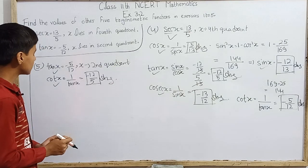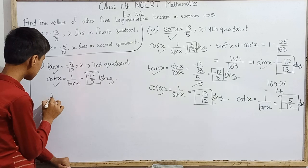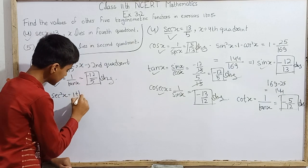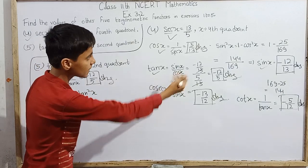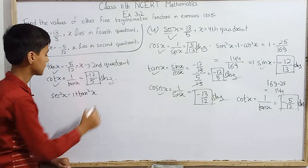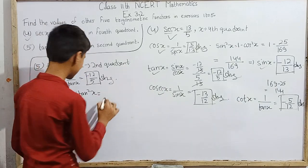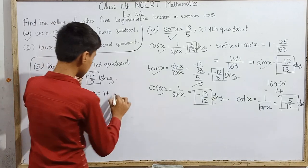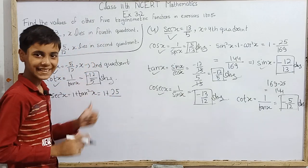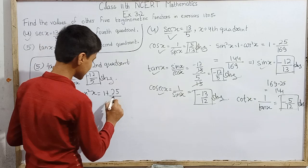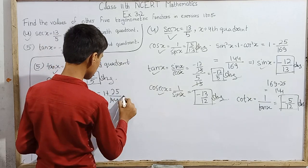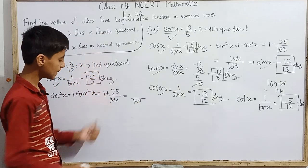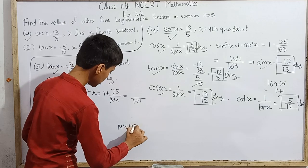So sec squared x equals 1 plus tan squared x. This equals 1 plus 25 over 144. The tan x is negative, but after squaring it becomes positive. With 144 as the common denominator, we have 144 plus 25, which equals 169 over 144.